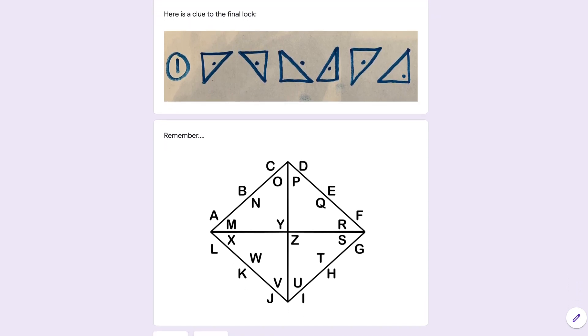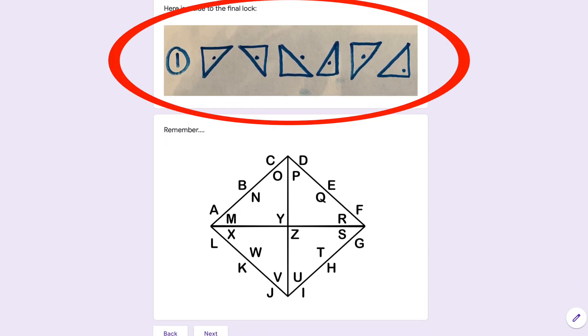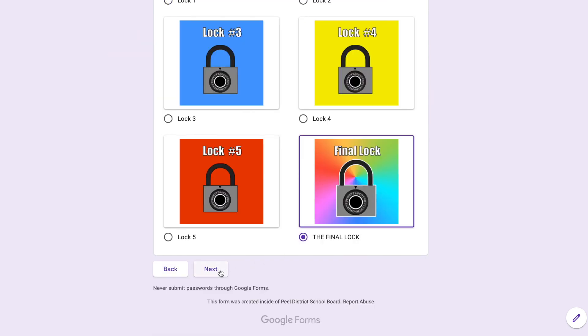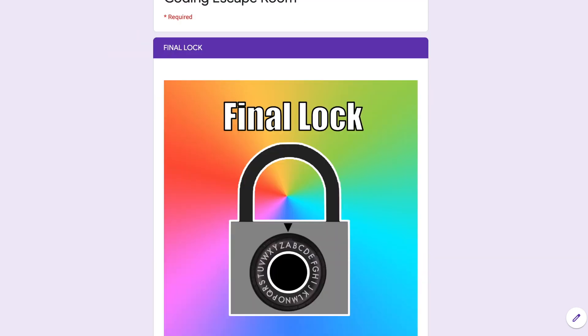When you unlock a lock you will be given part of a secret message. Collect all the parts of the secret message and then use the secret message to unlock the final lock to escape. I'll say goodbye but keep watching to see all the clues for unlocking the locks. Have fun reverse coding and we'll see you next episode.